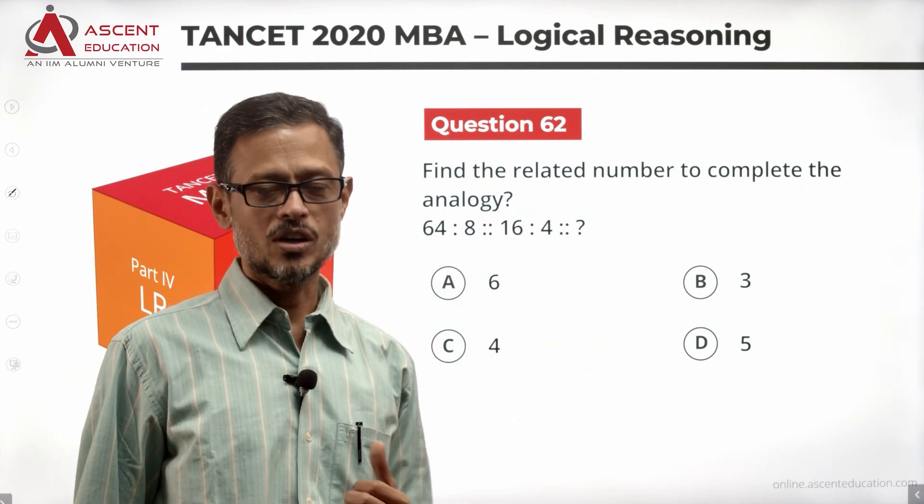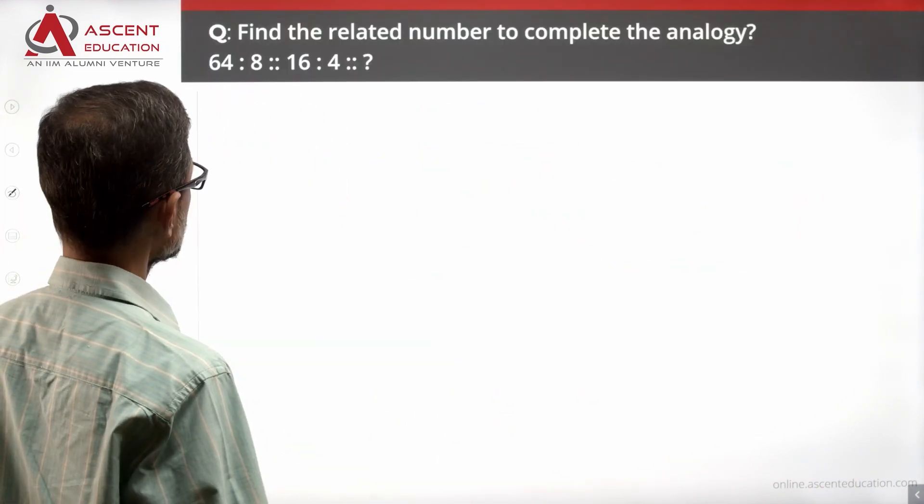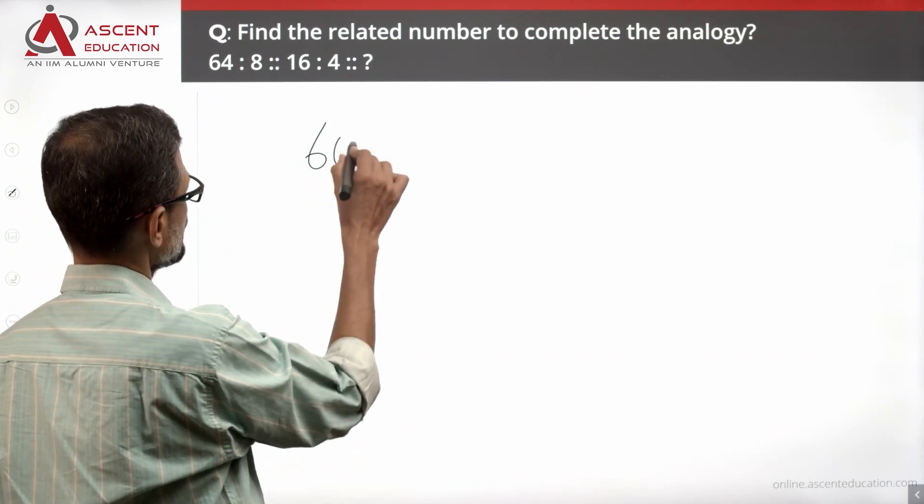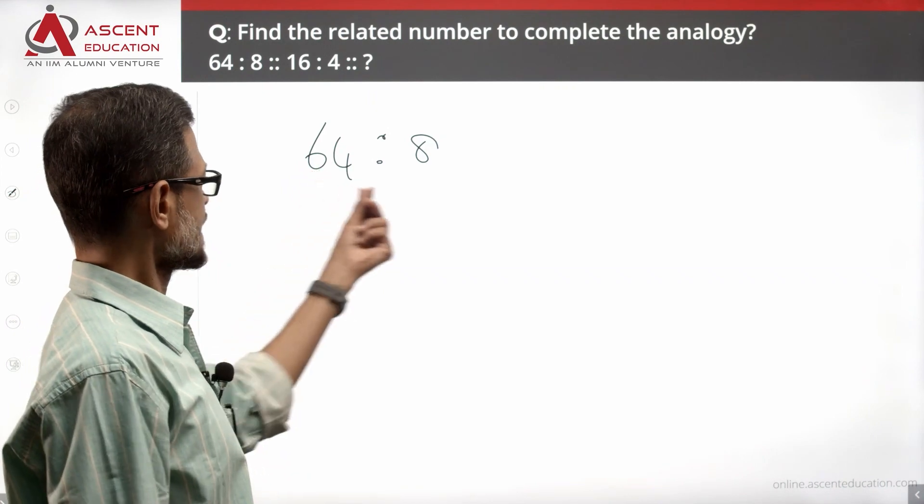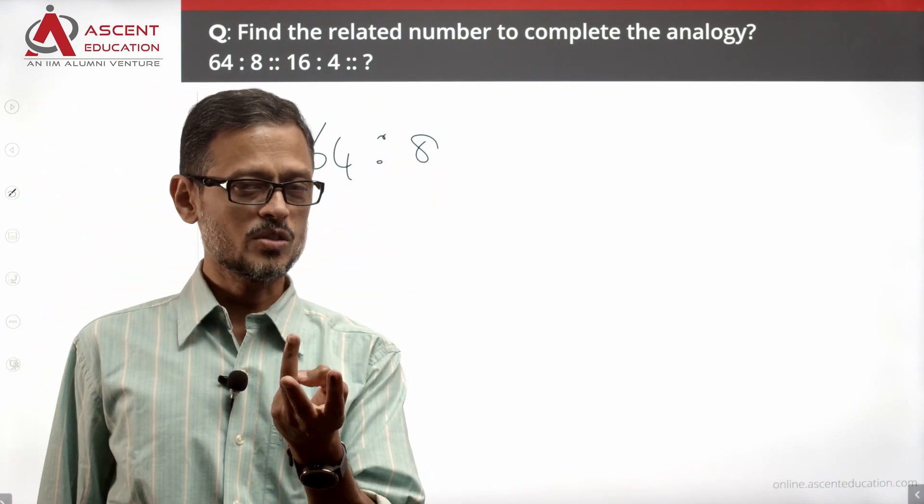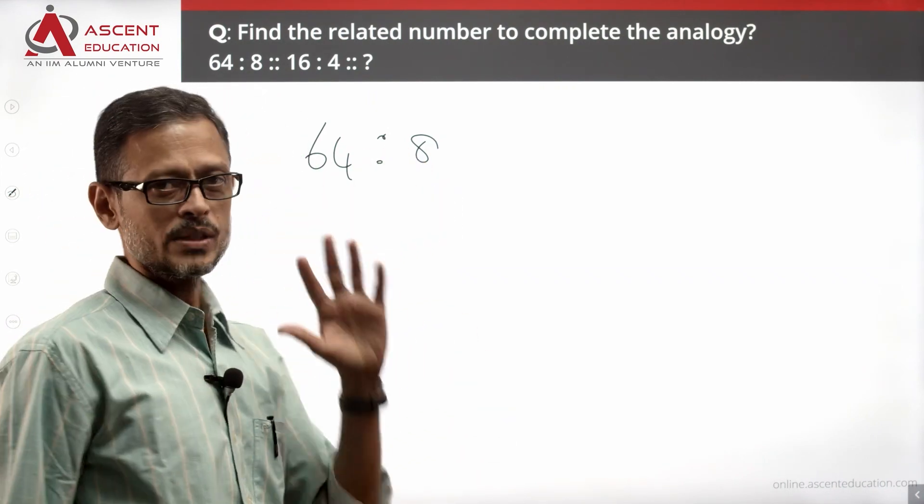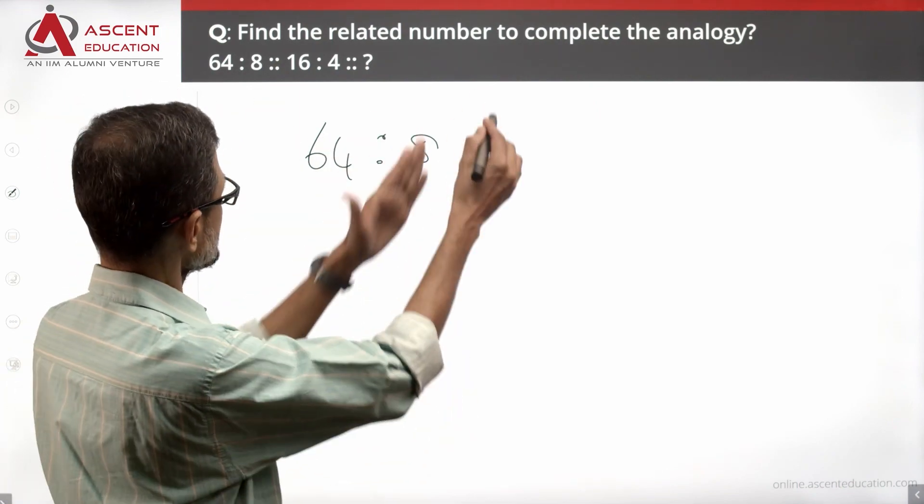In the analogy, let's just basically look at what is the analogy. 64 is to 8. How do you get it? One possibility is the square root. Let's check out with the second part.